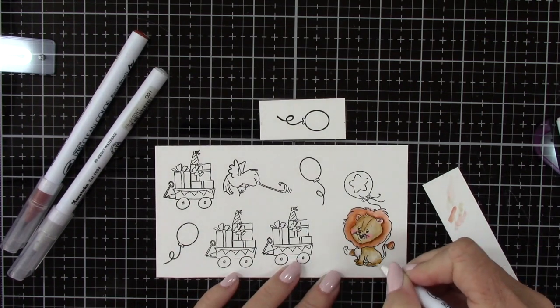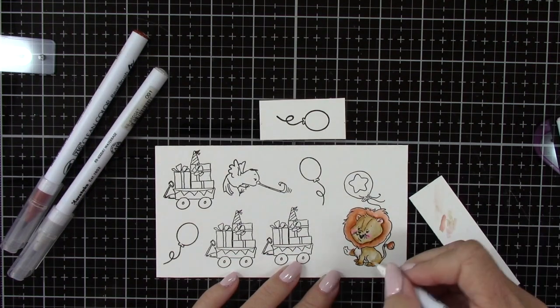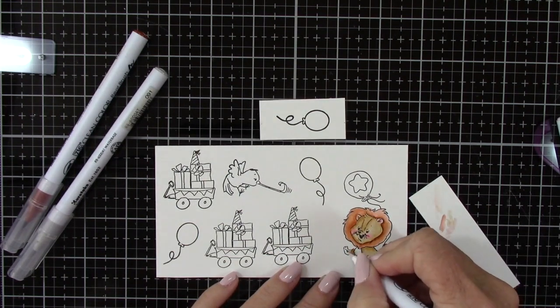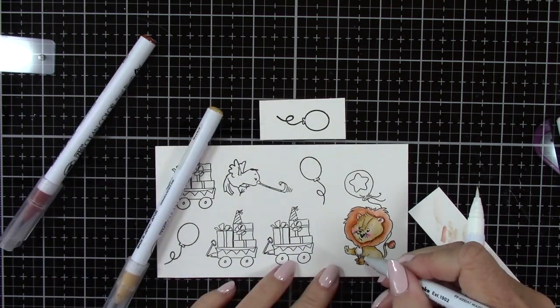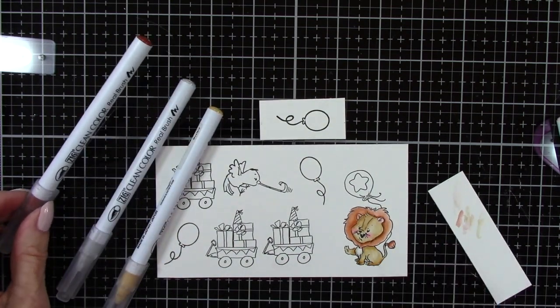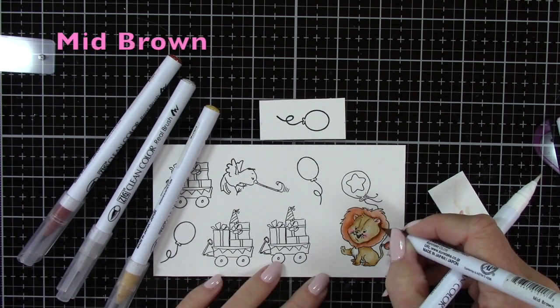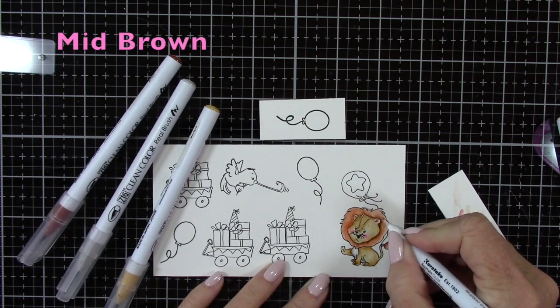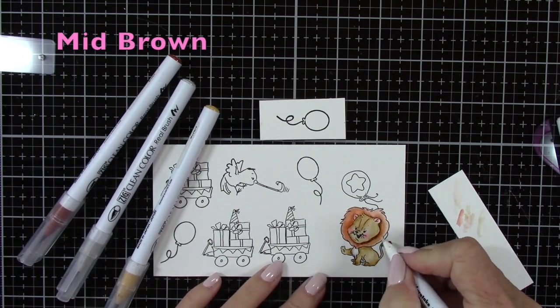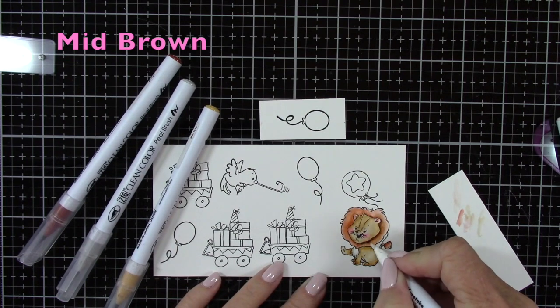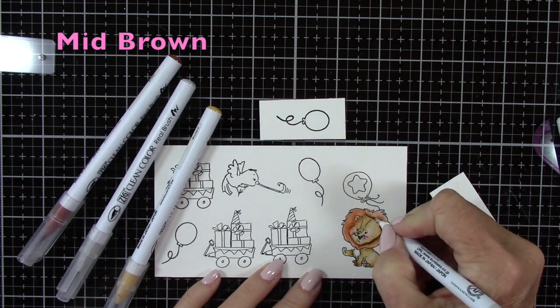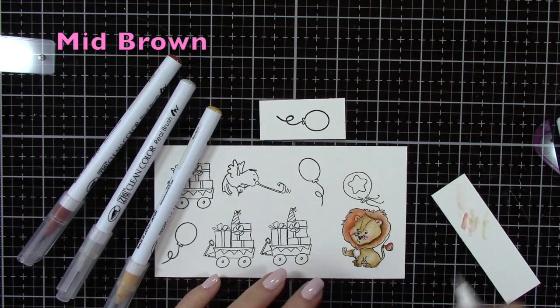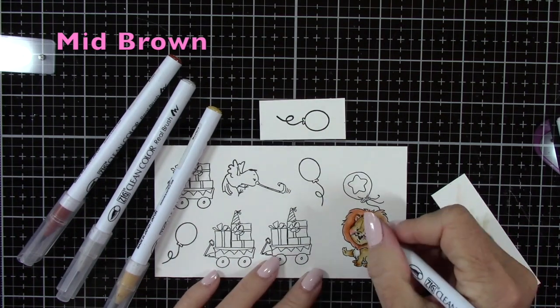So anything with your little critters or anything scary or I was even thinking something related to the Wizard of Oz would be kind of cute too. But I decided to do this little lion birthday card. I just thought it would be cute and fun. So here I did decide to add a little bit of the mid-brown right around the edges of the mane here just to give a little bit more of a shadow here. And I'll just blend that right out to the edges.